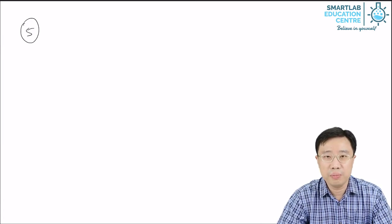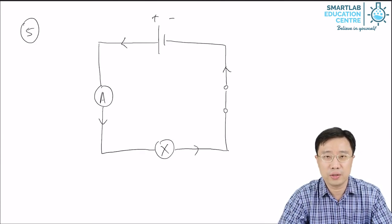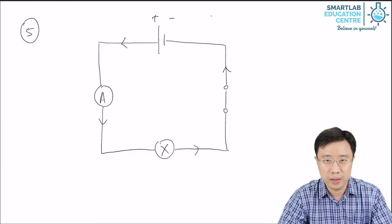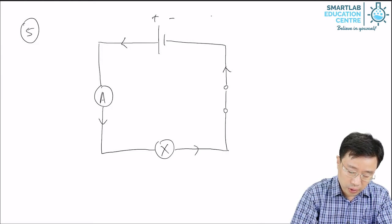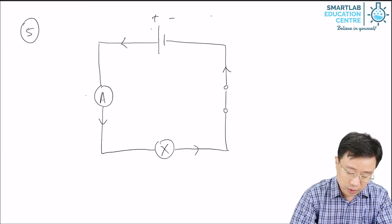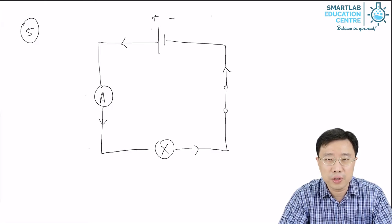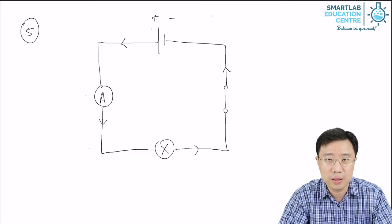How do you connect an ammeter in a circuit? If you want to measure the current flowing from an electric cell, then like in this diagram, the ammeter has to be connected in series with the electric cell. What does it mean for them to be connected in series? If you look at the flow from the positive terminal to the ammeter and through the ammeter, there is only one path for the current to flow. This is what we mean when we say the electric cell is connected in series with the ammeter.